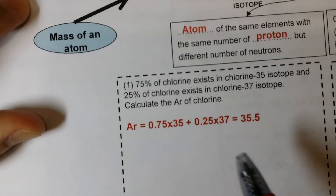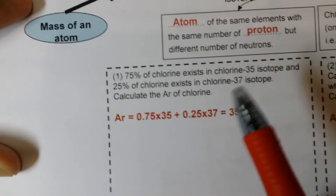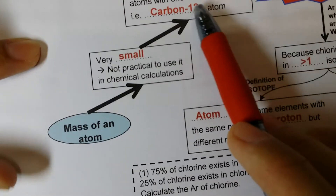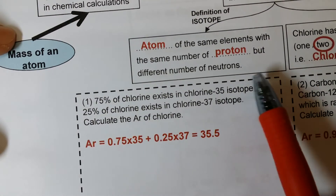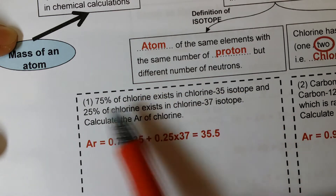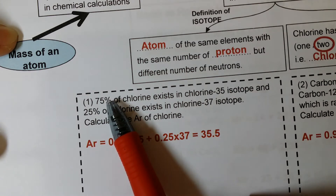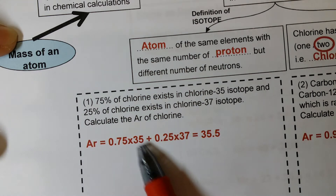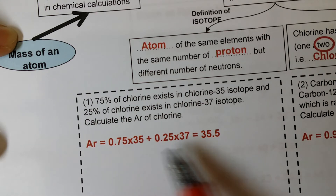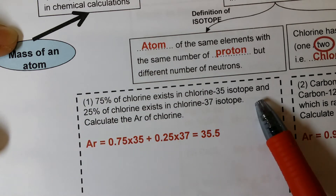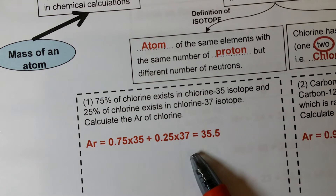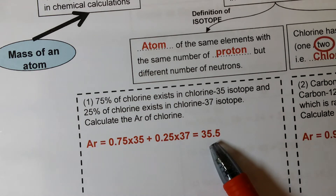How do you get the AR for chlorine? For chlorine, 75% exists as chlorine-35 and 25% as chlorine-37. So the calculation is: 0.75 × 35 + 0.25 × 37, which gives 35.5. This is how you calculate the AR of an element existing in more than one isotope.